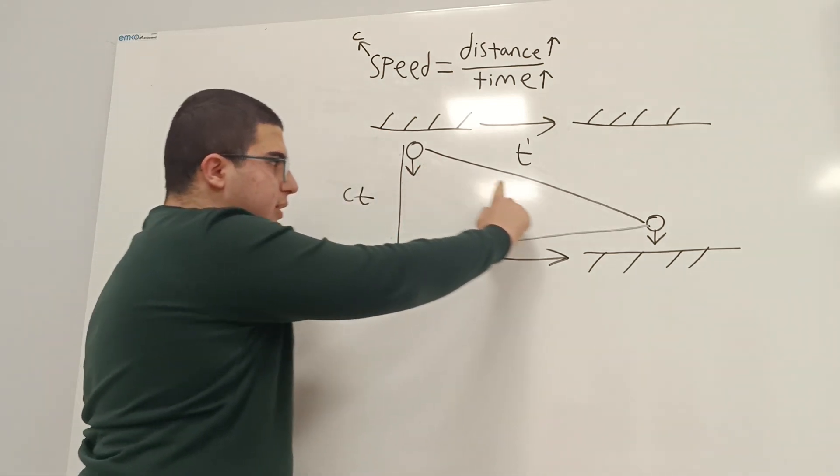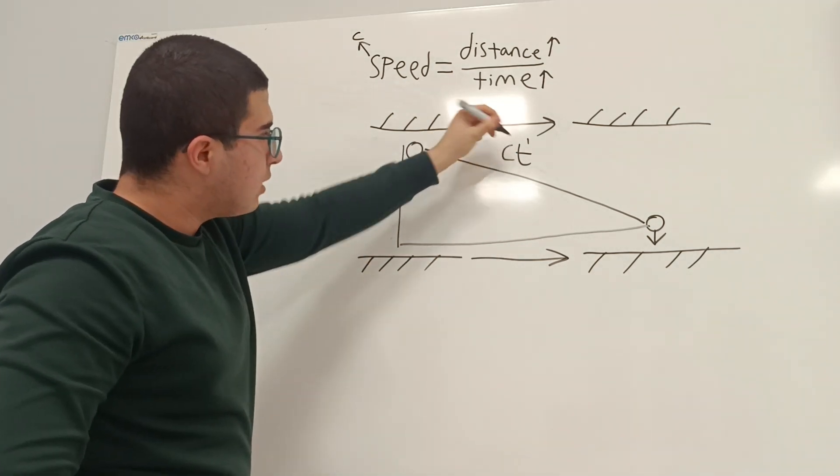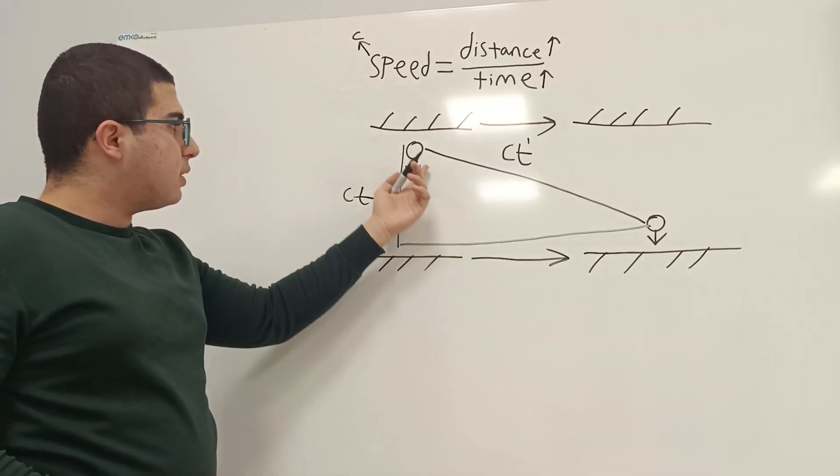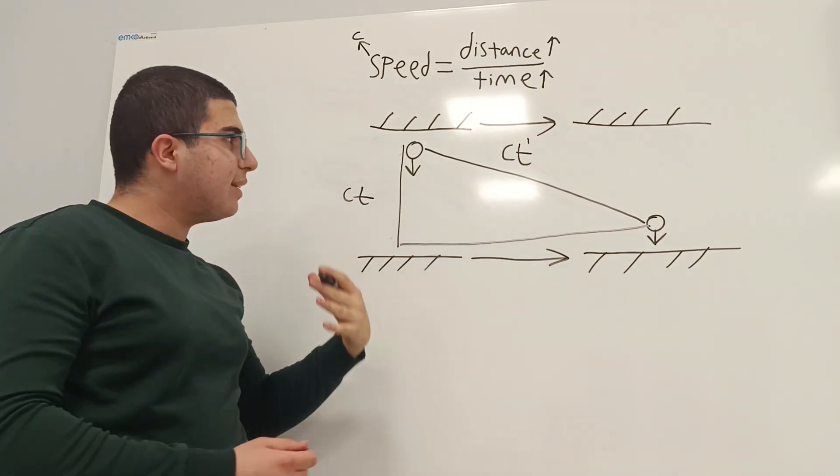And this distance, so this hypotenuse, is equal to c times t prime, the time that they had experienced, because it is the distance that this photon has covered in their time.